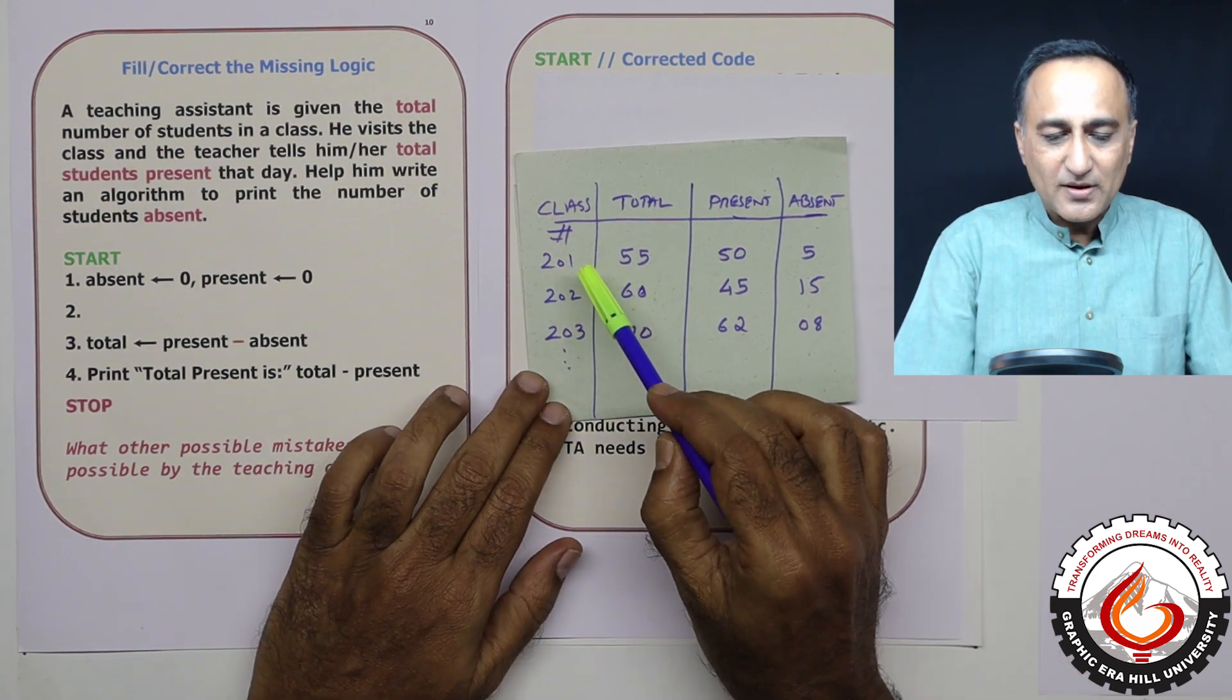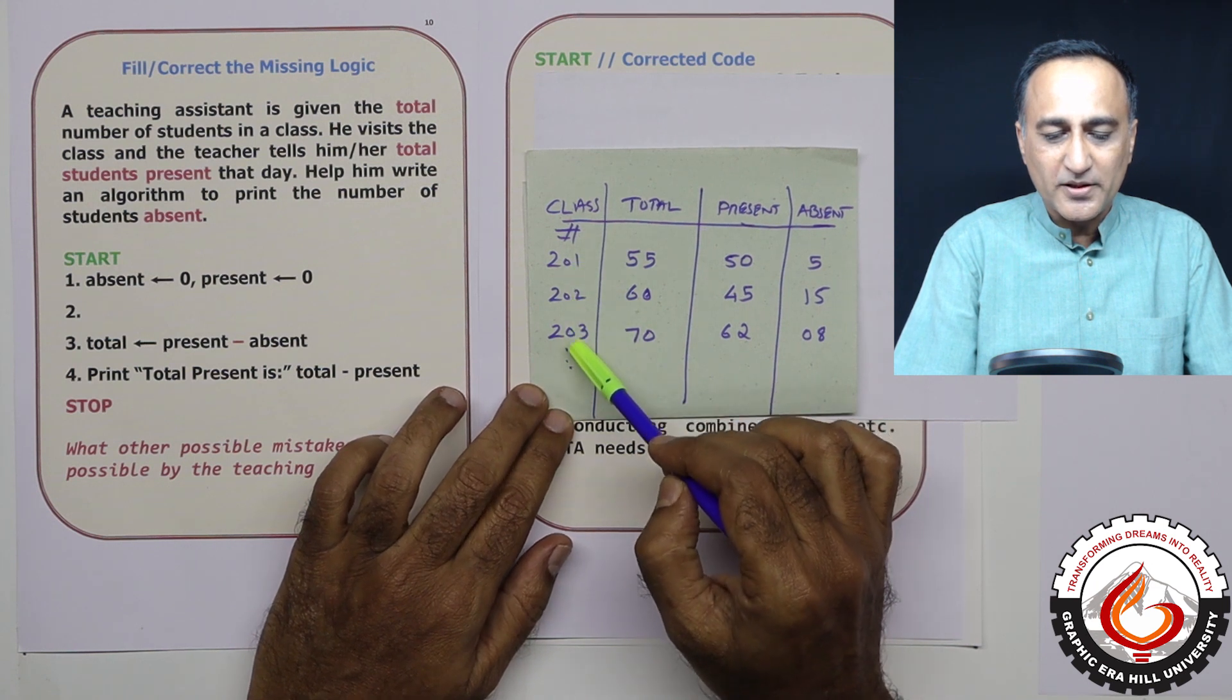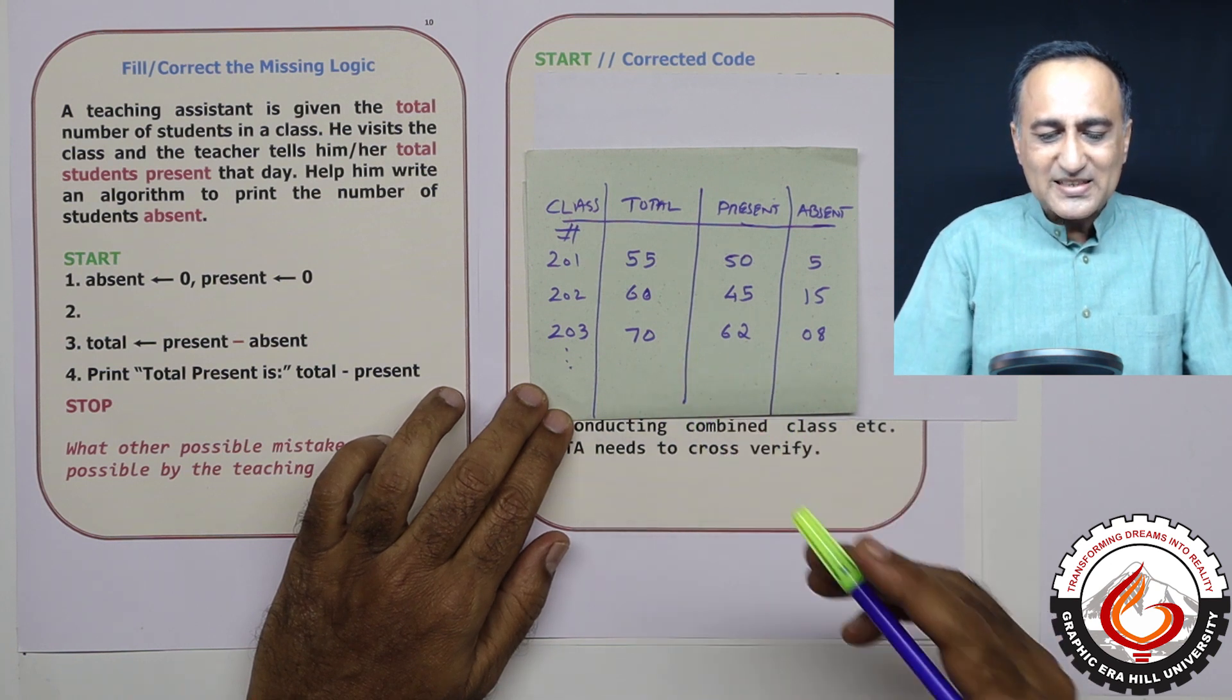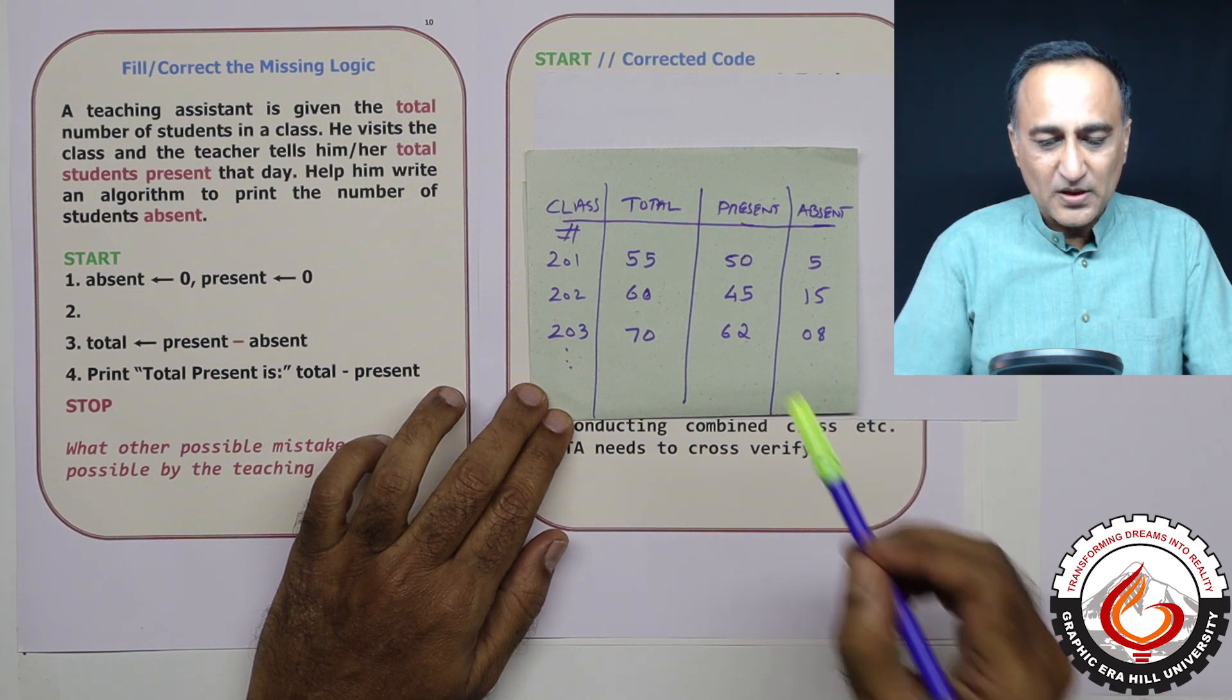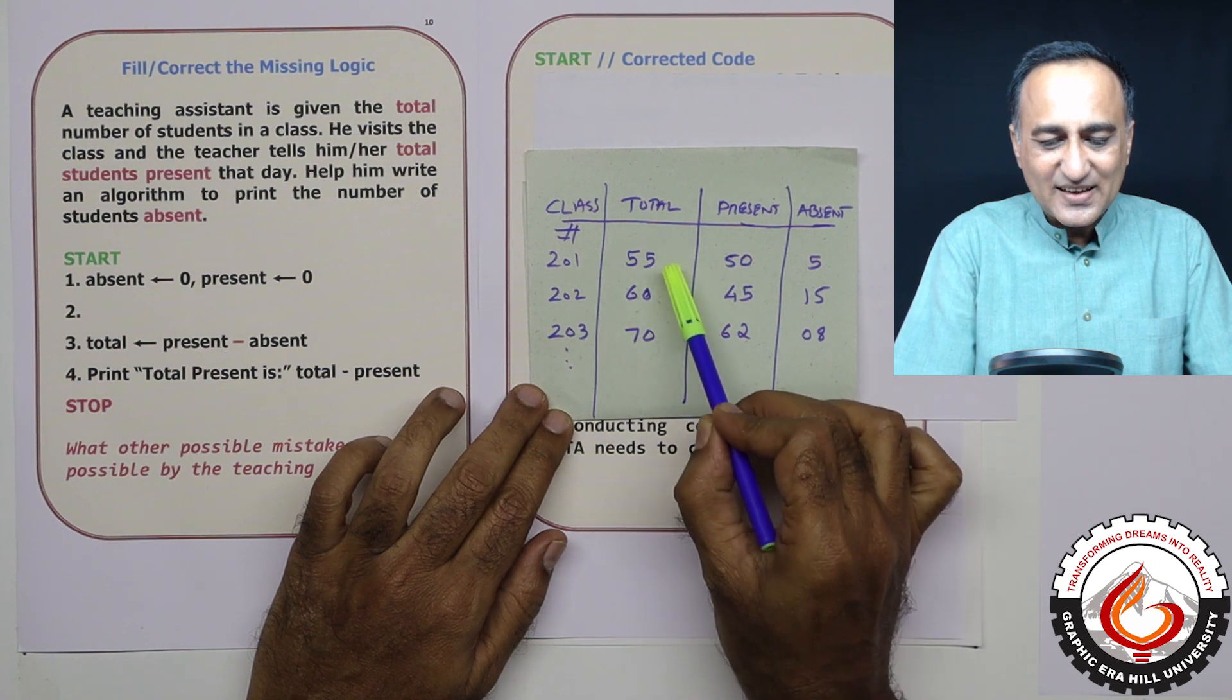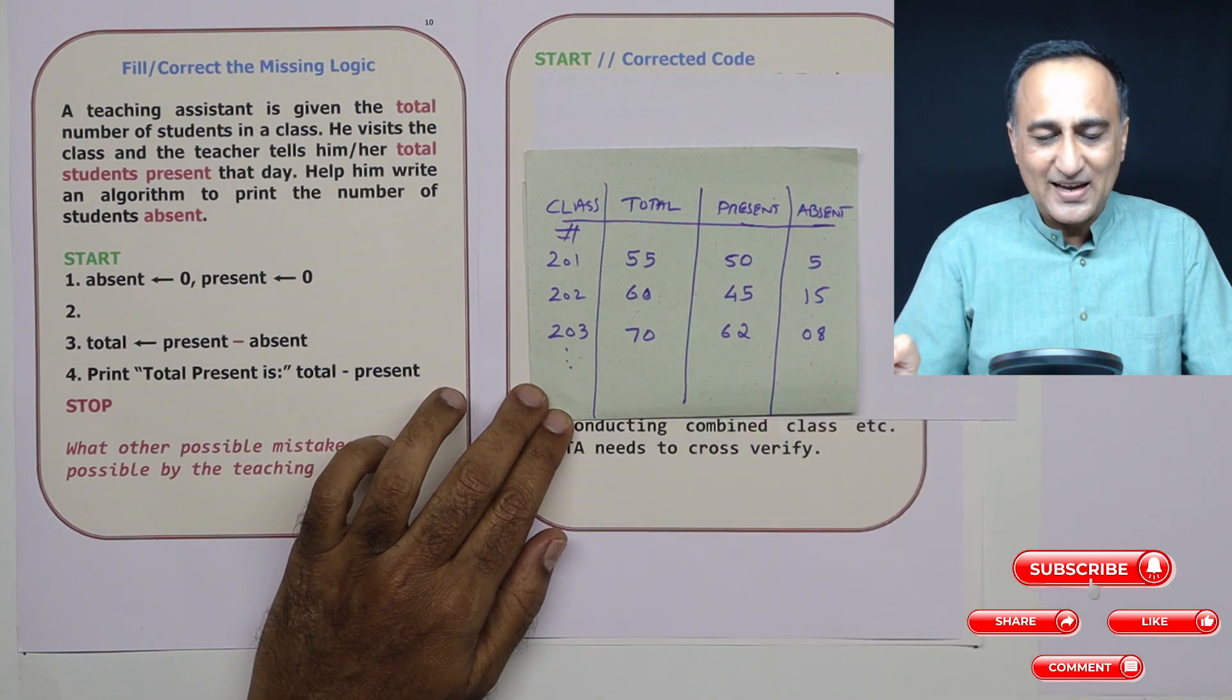Suppose I have classrooms numbered from 201, 202, 203, all the way till whatever number that university has. A teaching assistant is a person who is used to assist a senior teacher in his or her job. For all these classes, the teaching assistant carries how many students should be there in that particular classroom for a given class.